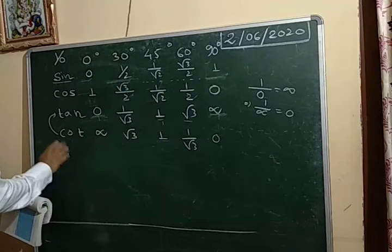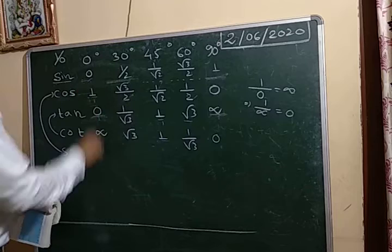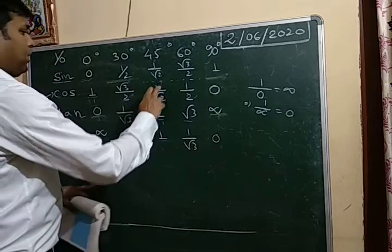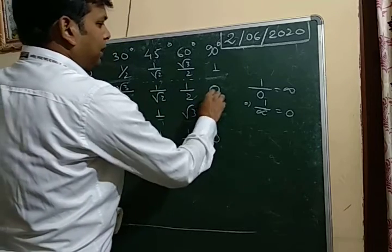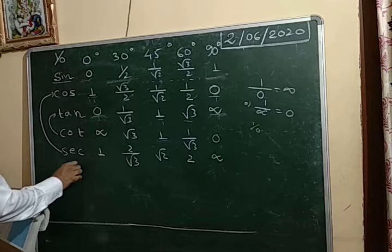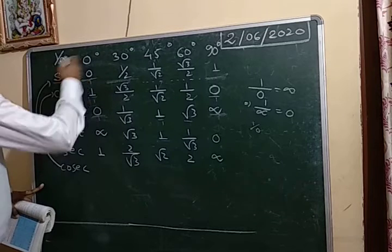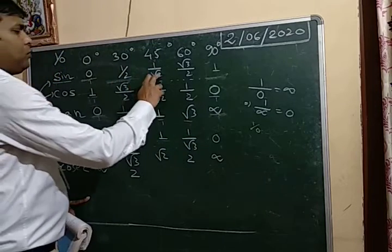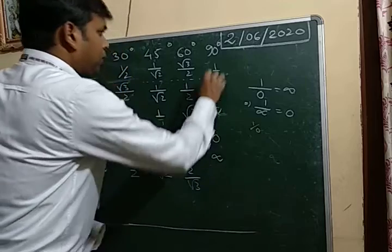Then sec: sec is the reciprocal of cosine. Sec 0° — reciprocal of 1 is 1. Sec 30° — reciprocal of √3/2 is 2/√3. Sec 45° — reciprocal of 1/√2 is √2. Sec 60° — reciprocal of 1/2 is 2. Sec 90° — cosine 90° is 0, so 1/0 is undefined or infinity. Then cosec: cosec is the reciprocal of sine. Cosec 0° is 1/0, which is infinity. Cosec 30° is reciprocal of 1/2, which is 2. Cosec 45° is reciprocal of 1/√2, which is √2. Cosec 60° is 2/√3. Cosec 90° is reciprocal of 1, which is 1.